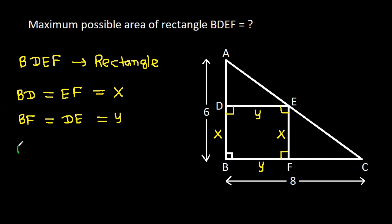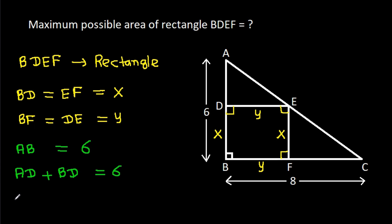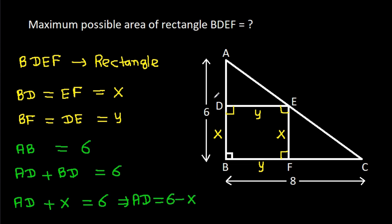We have AB equal to 6. And AB is AD plus BD, which is 6. So AD plus BD equals X, giving us 6. Therefore, AD will be 6 minus X.